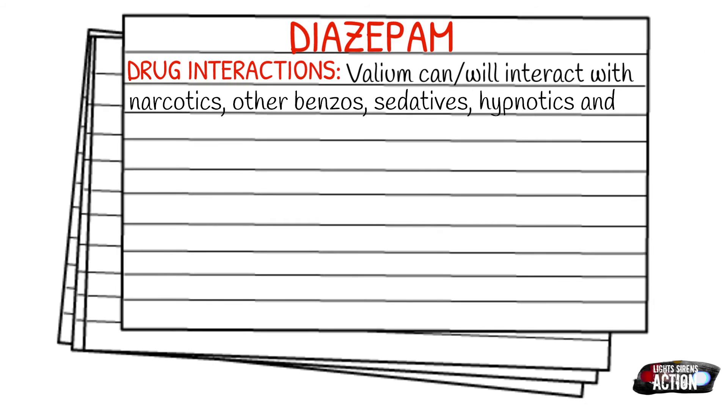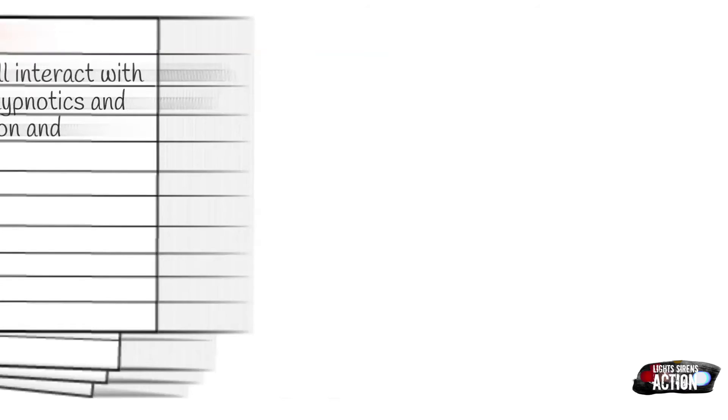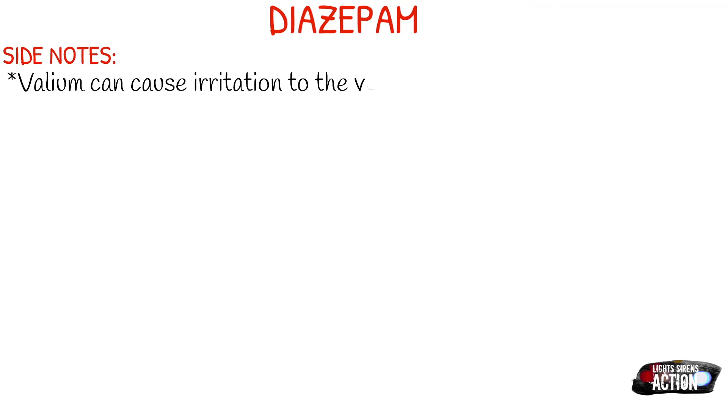How it's typically supplied: in the EMS field you will definitely see it as 5 milligrams in a 1 ml vial. A few side notes about Valium — it can be an irritant to the vein just like Versed is, so it's important to locate a larger, healthier vein, make sure you flush the IV line, don't leave any excess medication in the IV line itself, and do not dilute this with other solutions.